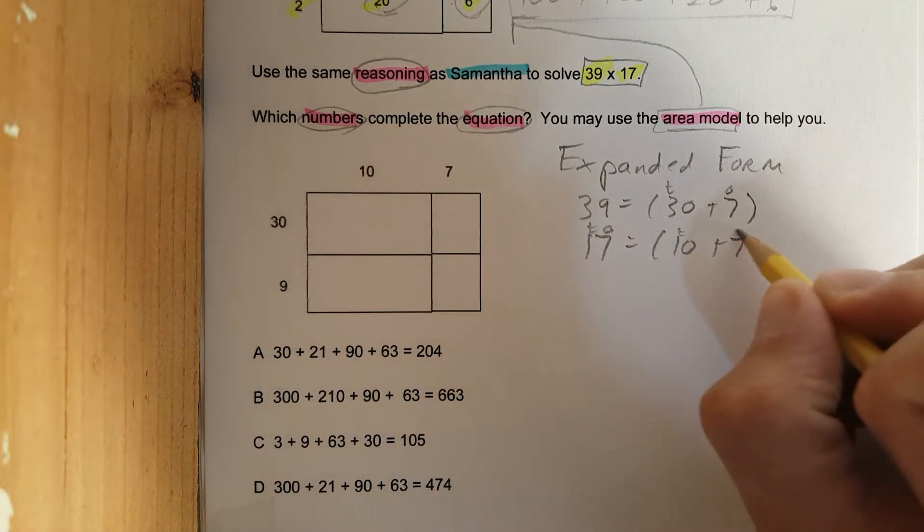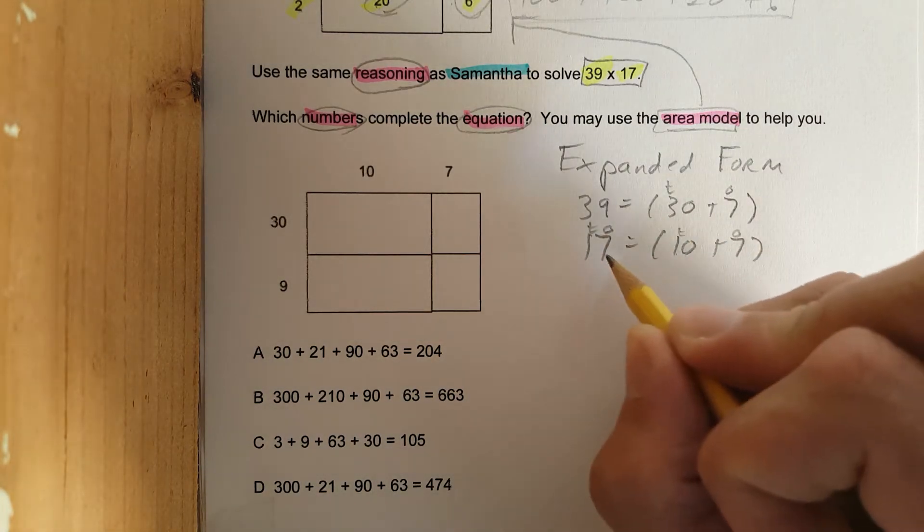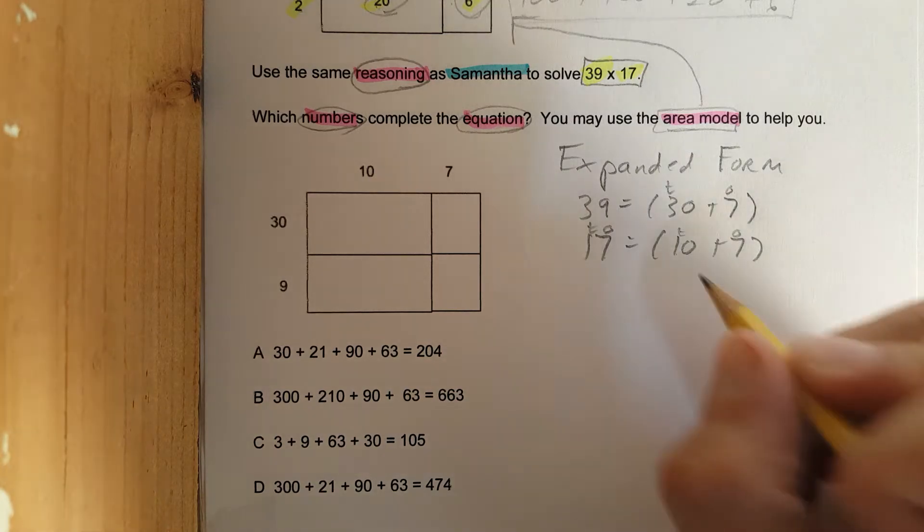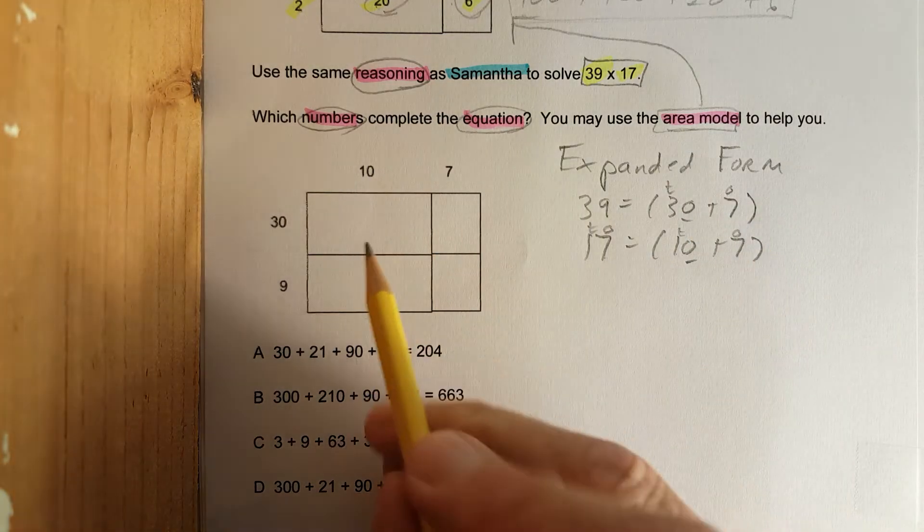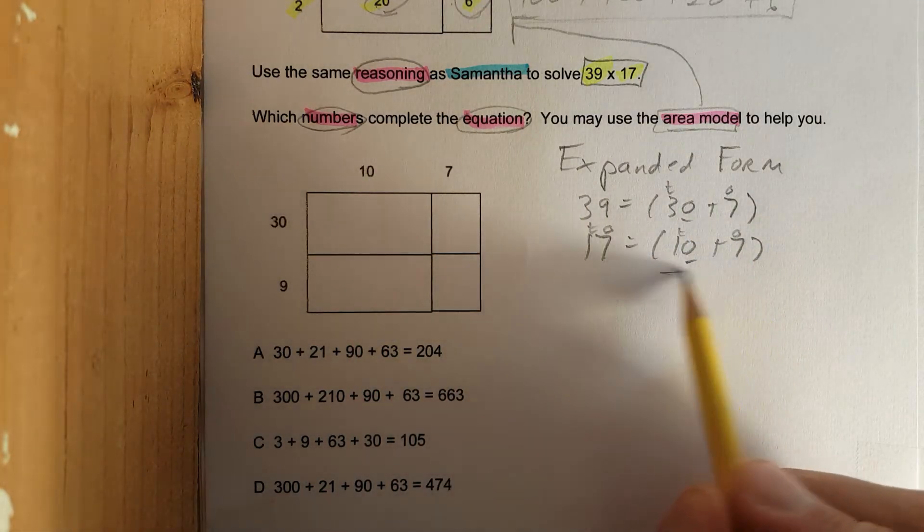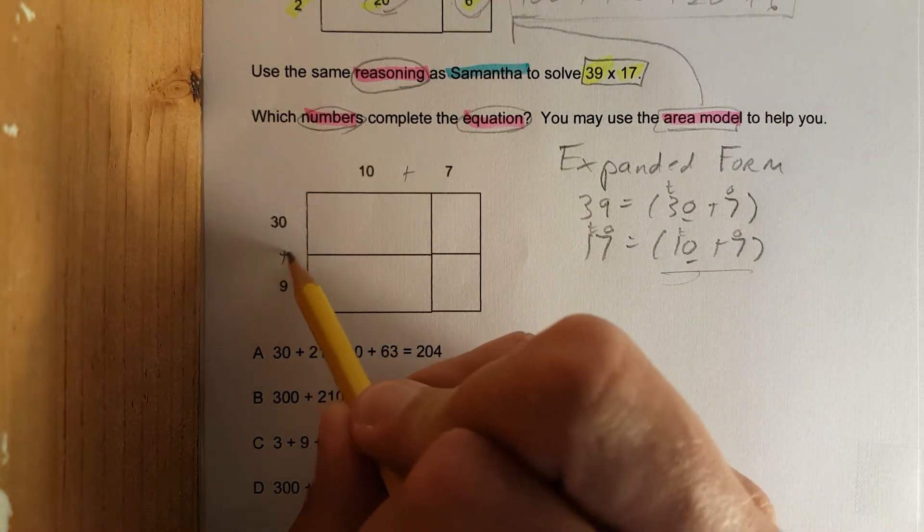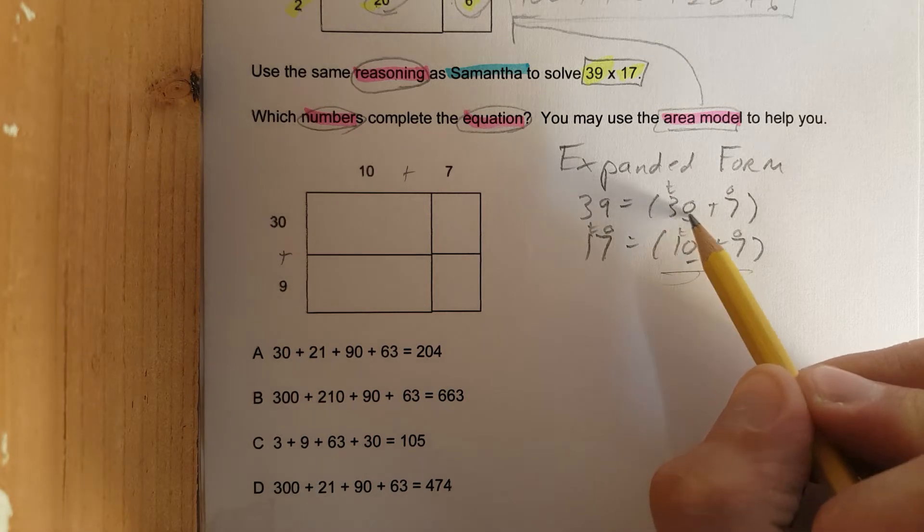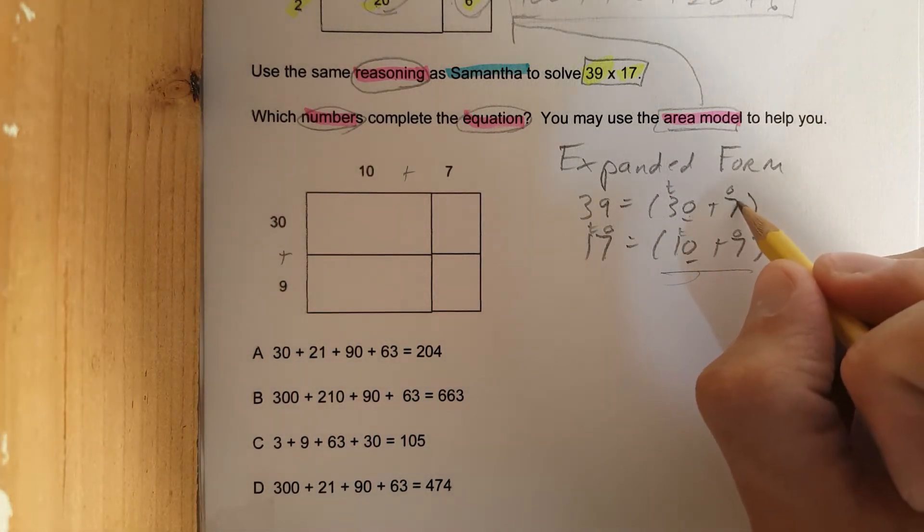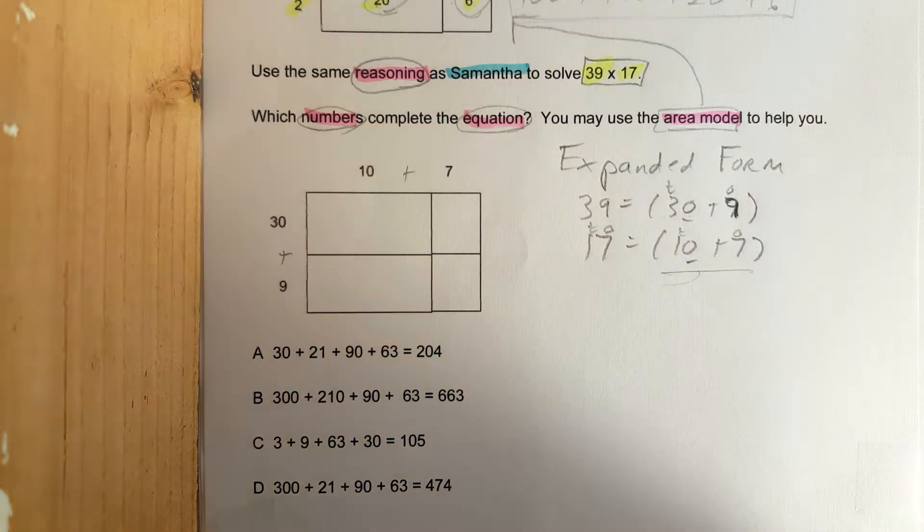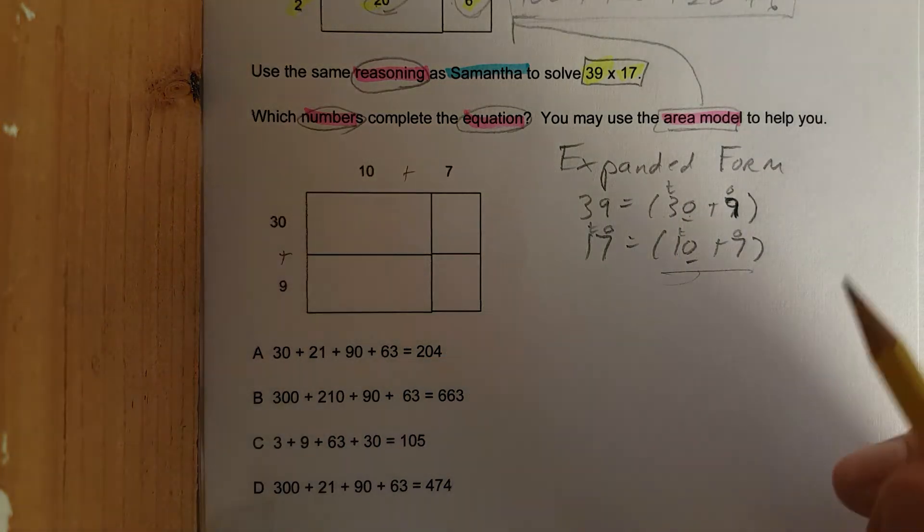Ones, tens, tens, ones. There's one ten, seven ones. 10 plus 7 is right here. 30 plus 9, gotta write this correctly. Remember in math, make sure you double, triple check. Everybody makes mistakes, especially me.